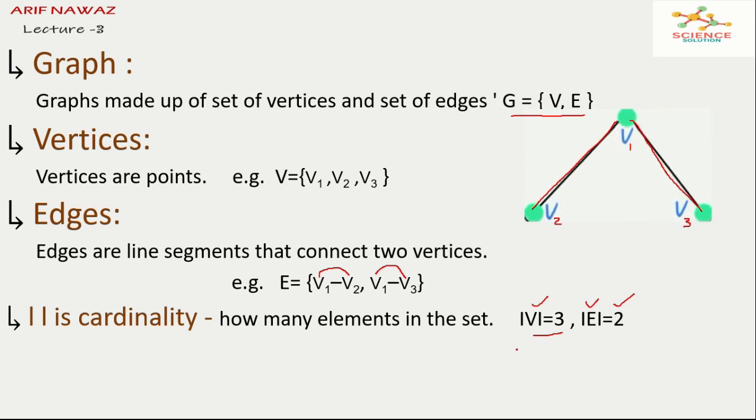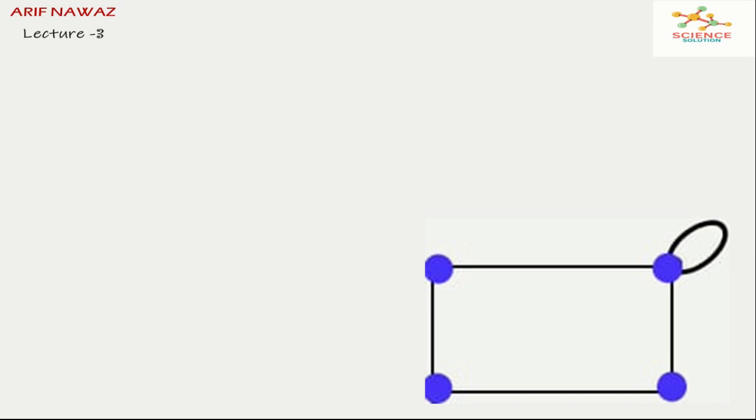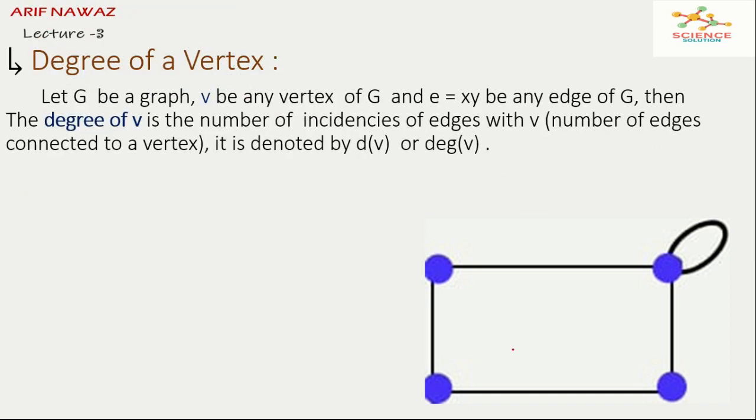Now we define degree of a vertex. Let G be a graph, V be any vertex of G and e equals xy be any edge of G, then the degree of V is the number of incidences of edges with V. We mean number of edges connected to our vertex is called degree of that vertex. It is denoted by d of V or deg of V.